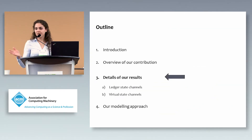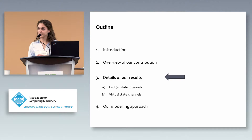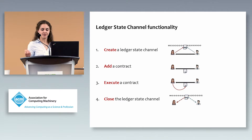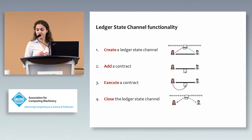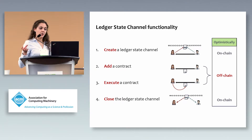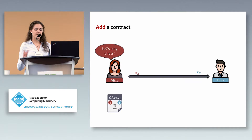Let me explain our construction in more detail, starting with ledger state channels. The functionality requires two parties to create the channel, add a new contract (start a game), execute the contract (play), and close it. Importantly, adding and executing a contract should happen completely off-chain if both parties are honest — we call this the optimistic case. Suppose Alice proposes to play chess. She locally prepares the initial settings and sends her signature on version one of the chess game to Bob. If Bob agrees, he sends his signature back.